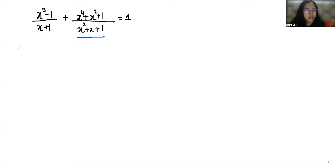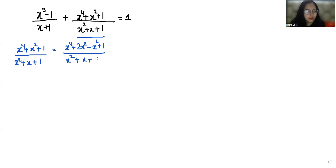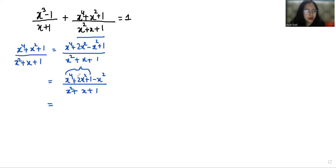So first I'm going to solve x⁴ plus x² plus 1 by x² plus x plus 1. I can write the x² in the numerator as 2x² minus x², and rearrange this as x⁴ plus 2x² plus 1 minus x², all over x² plus x plus 1. Now this becomes a formula of (a plus b) whole square, where a is x², giving us (x² plus 1)² minus x², divided by x² plus x plus 1.